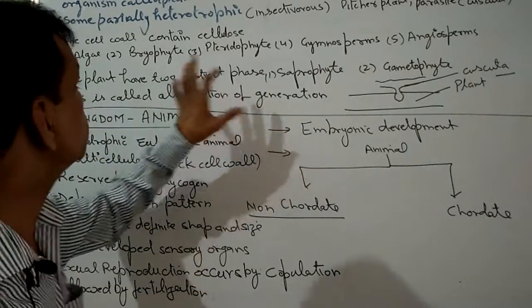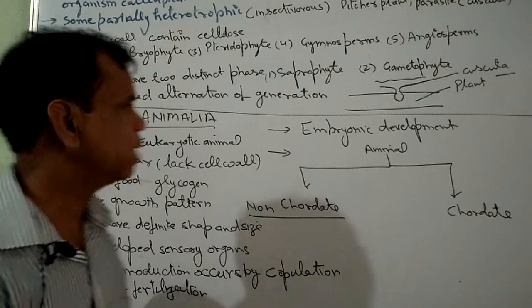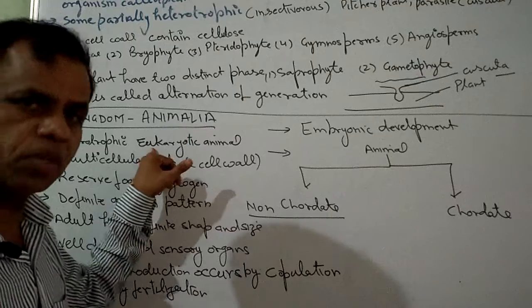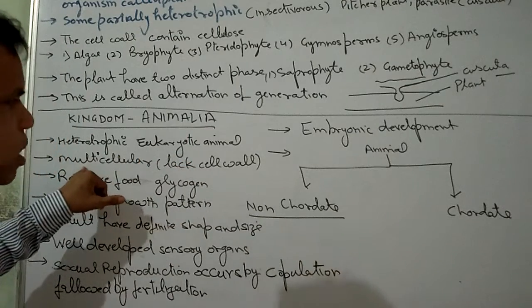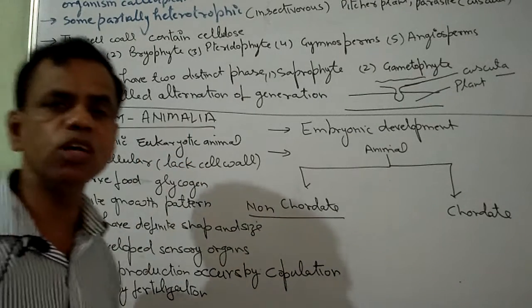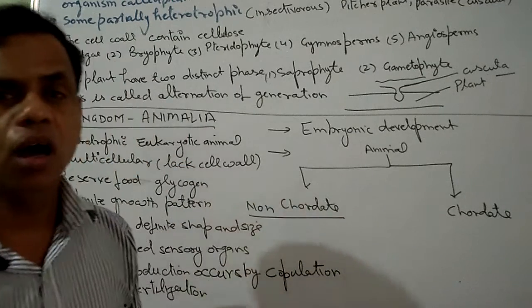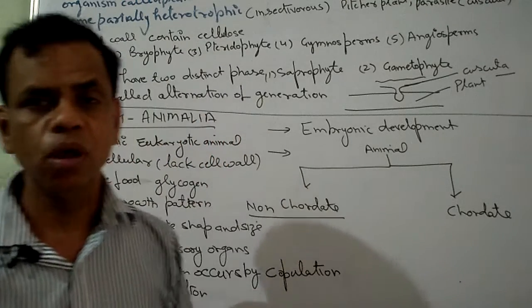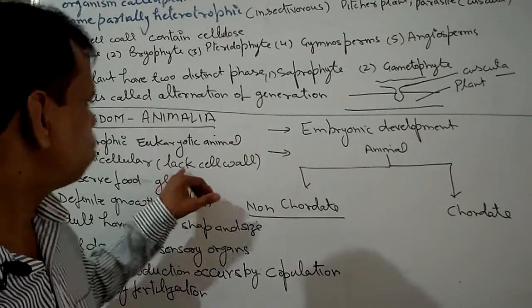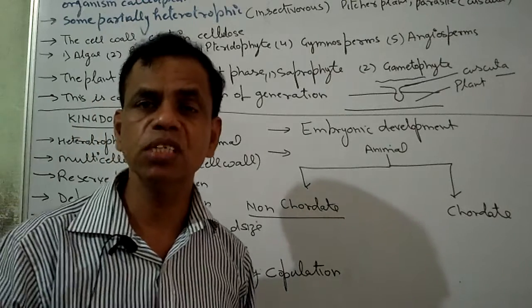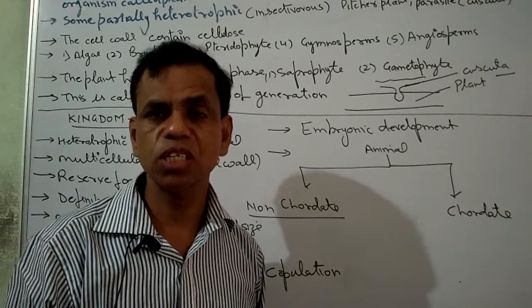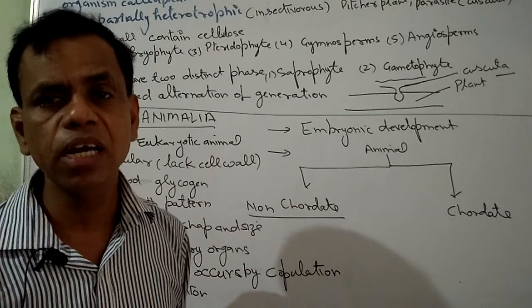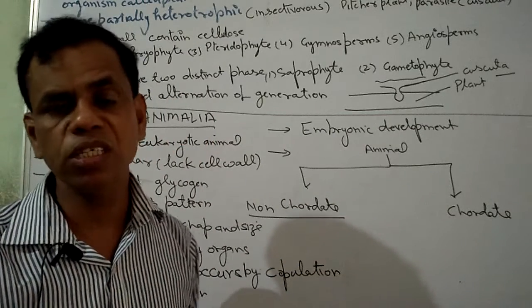Now we discuss about the kingdom Animalia. Animals are heterotrophic animals and multicellular. The plant is not present in animals. Animals are heterotrophs because they do not contain chloroplast.